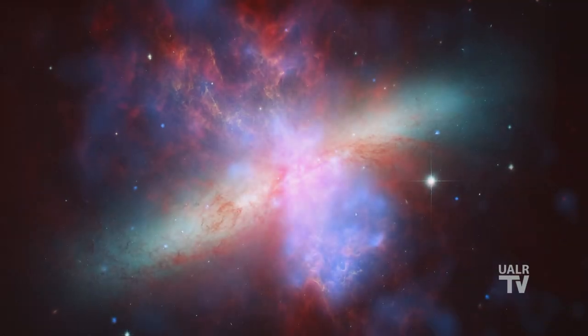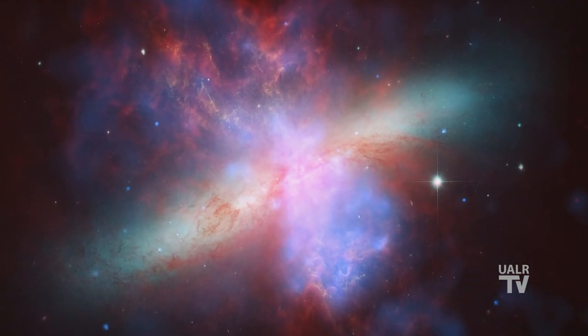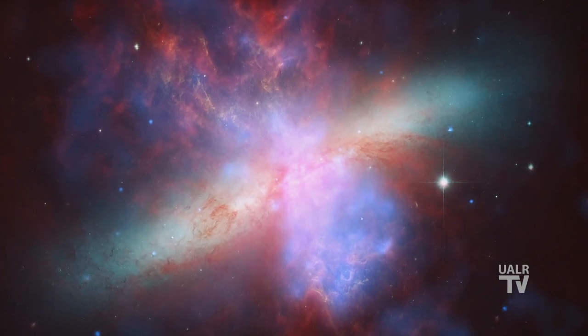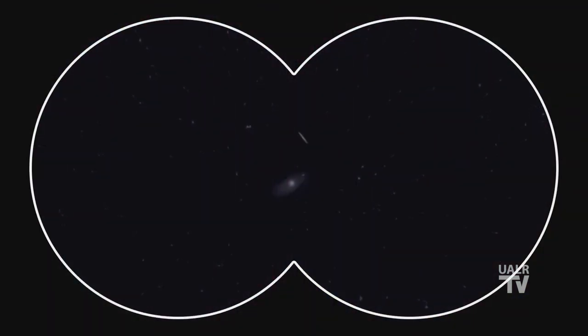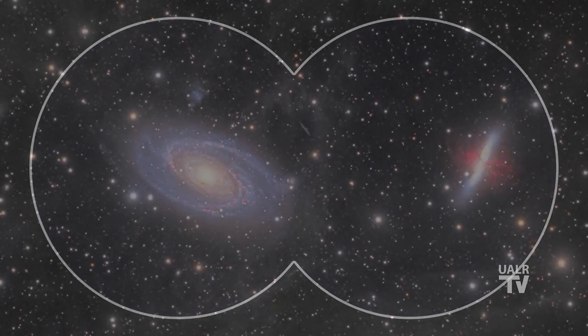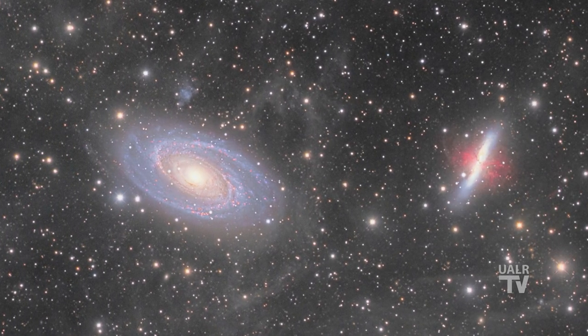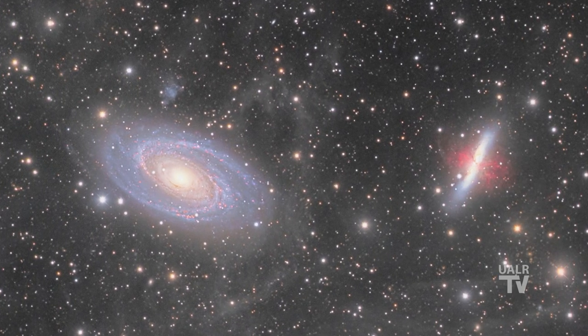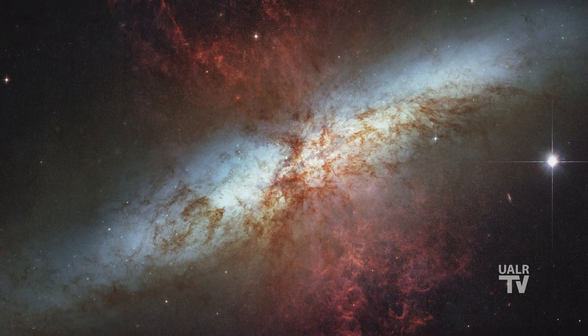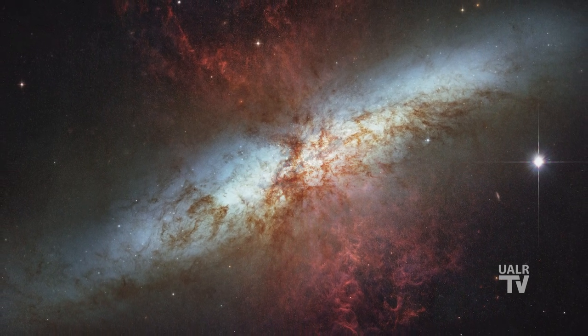Rather than having an oval shape like M81, M82 is more spindle or cigar shaped. The reason for this is that we are seeing the galaxy edge on as opposed to M81 with its nearly face on view. As a consequence, M82 appears a bit dimmer than its companion. Both M81 and M82 are interacting gravitationally with one another, and at some point in the past they must have had a very close encounter where the gravity of M81 strongly distorted M82. This encounter also triggered a burst of star formation inside M82.